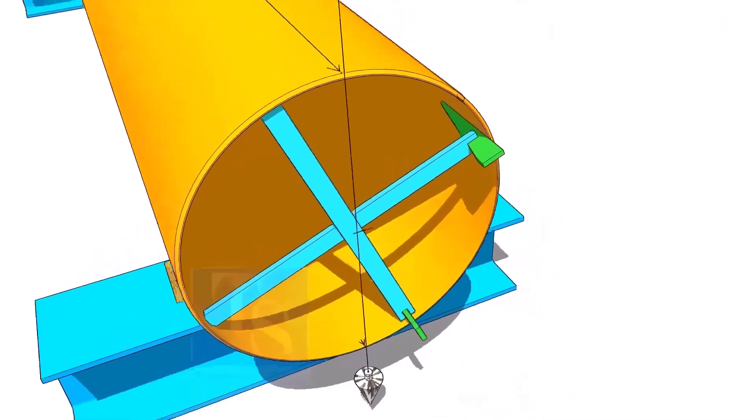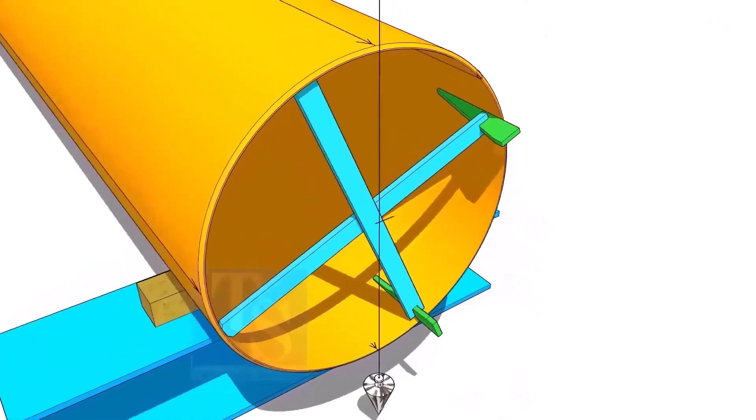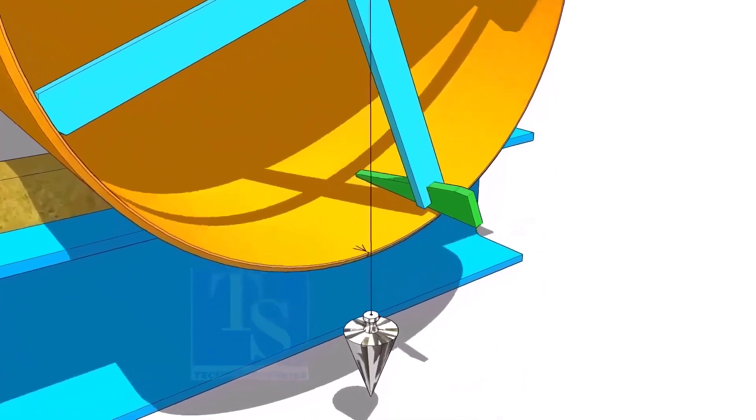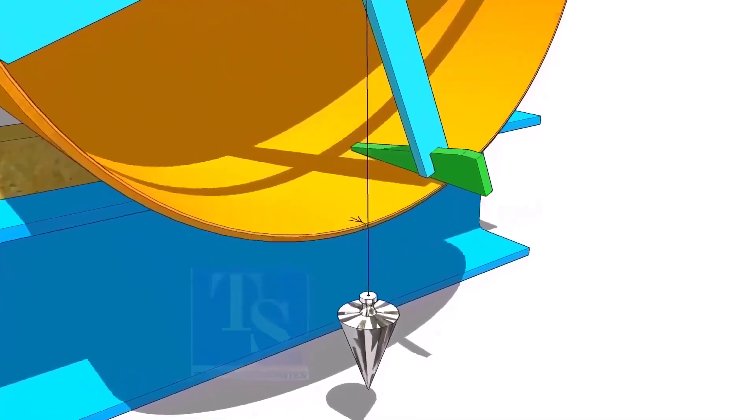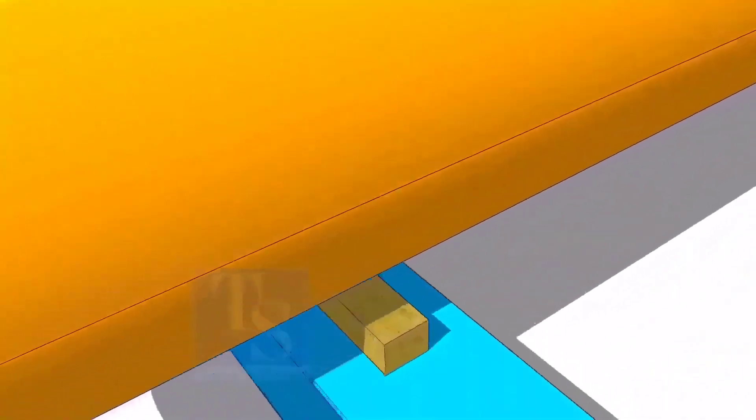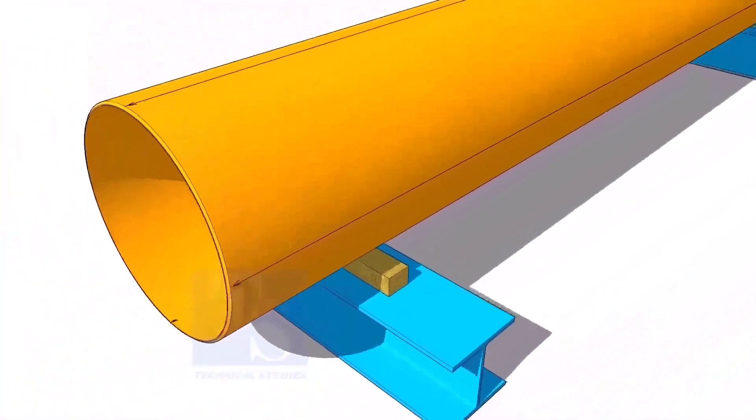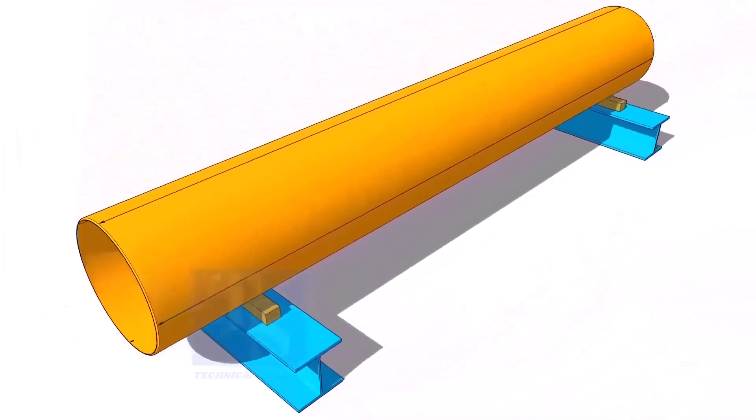Put the plumb on the top side line. If the string passes through the line on the bottom, the lines are correct. Thank you for watching.